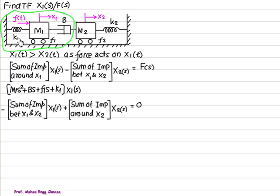Impedance of B is Bs, impedance of K1 is K1. We have friction, friction is treated as a damper, so the impedance of F1 is F1s. The spring has a displacement of X1 and ground, damper has a displacement between X1 and X2, K2 has a displacement of X2 and ground.